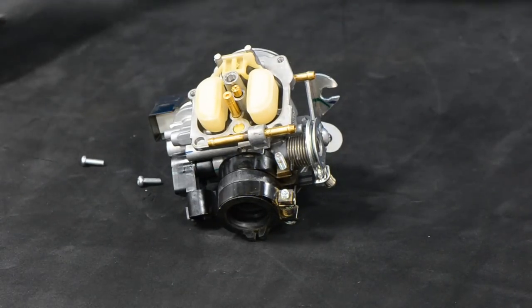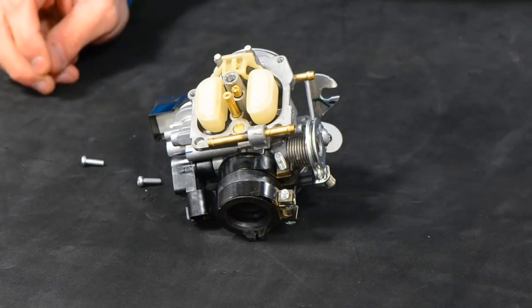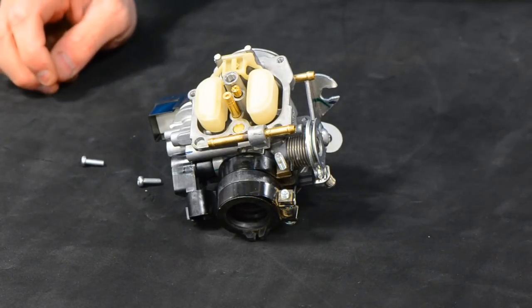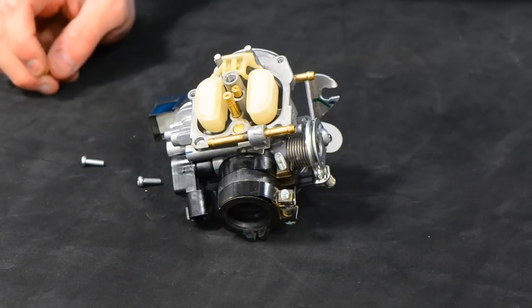On the main jet, the size will depend on your application. In this particular application, we're running an aftermarket exhaust and an aftermarket intake, so we're going to jump up from a 75 to an 82. Typically, you'll end up somewhere between a 78 and an 85.